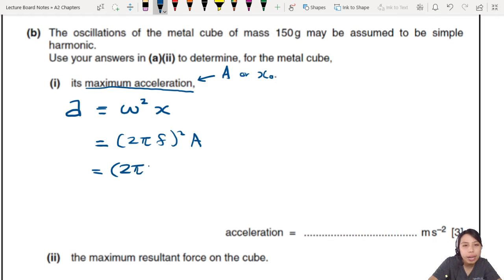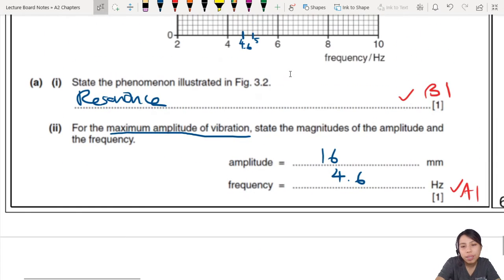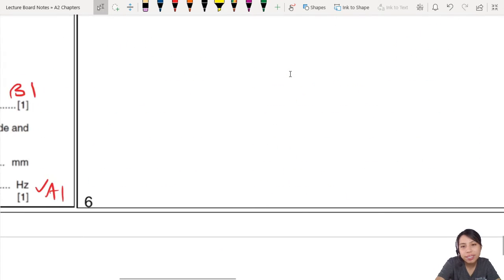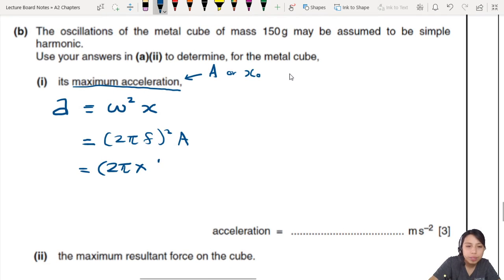So let's do the calculation. 2π, frequency is what? Did we find the frequency yet? Have we found omega? Yes, we have. Previous section, here. Frequency is 4.6. So let's use 4.6. Here. Square. Times the amplitude, which is 16 millimeters. So 16 times 10 to the power negative 3. There we go.